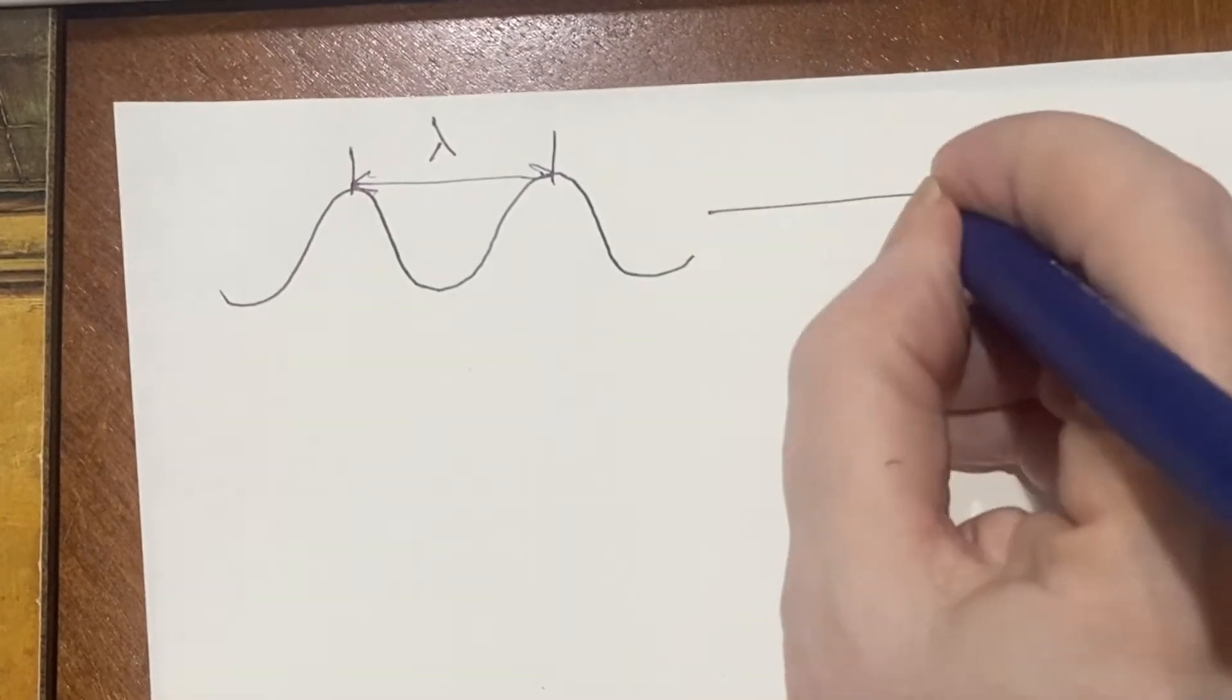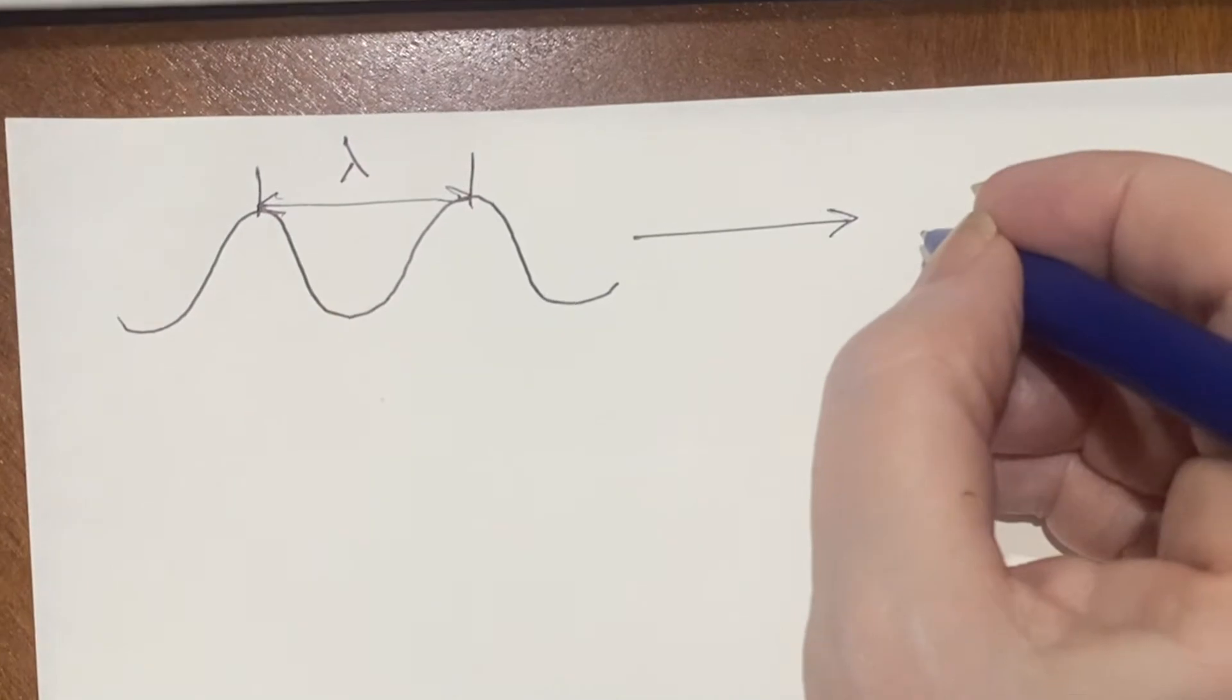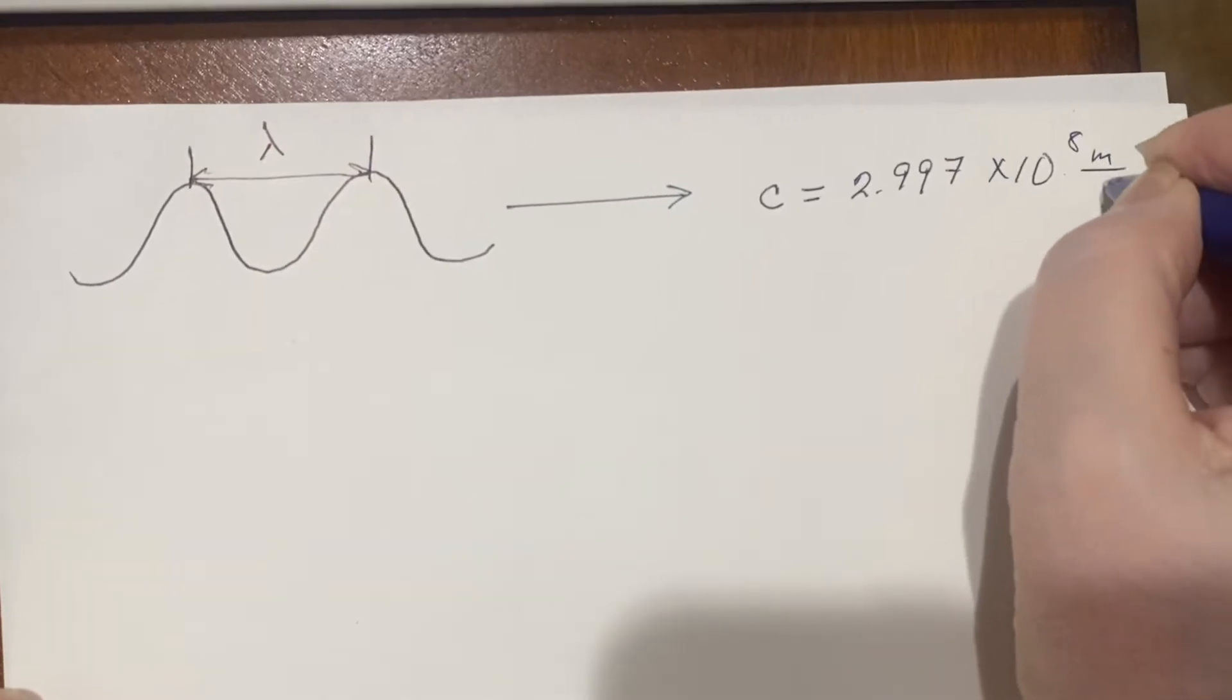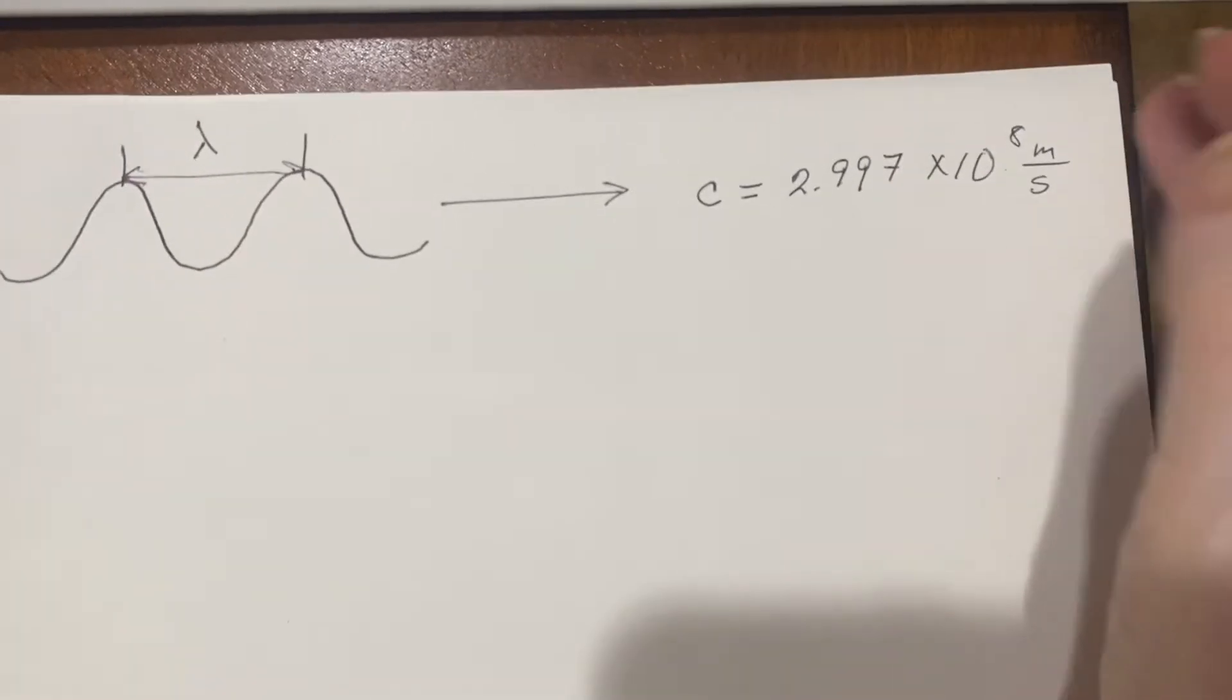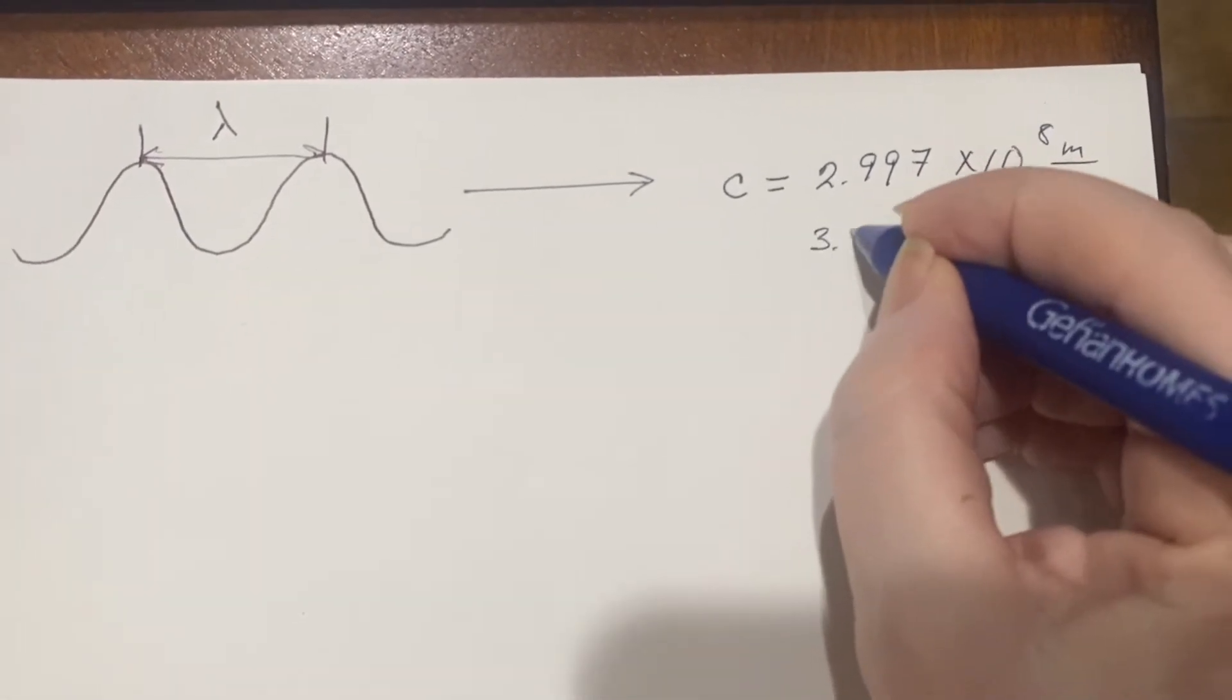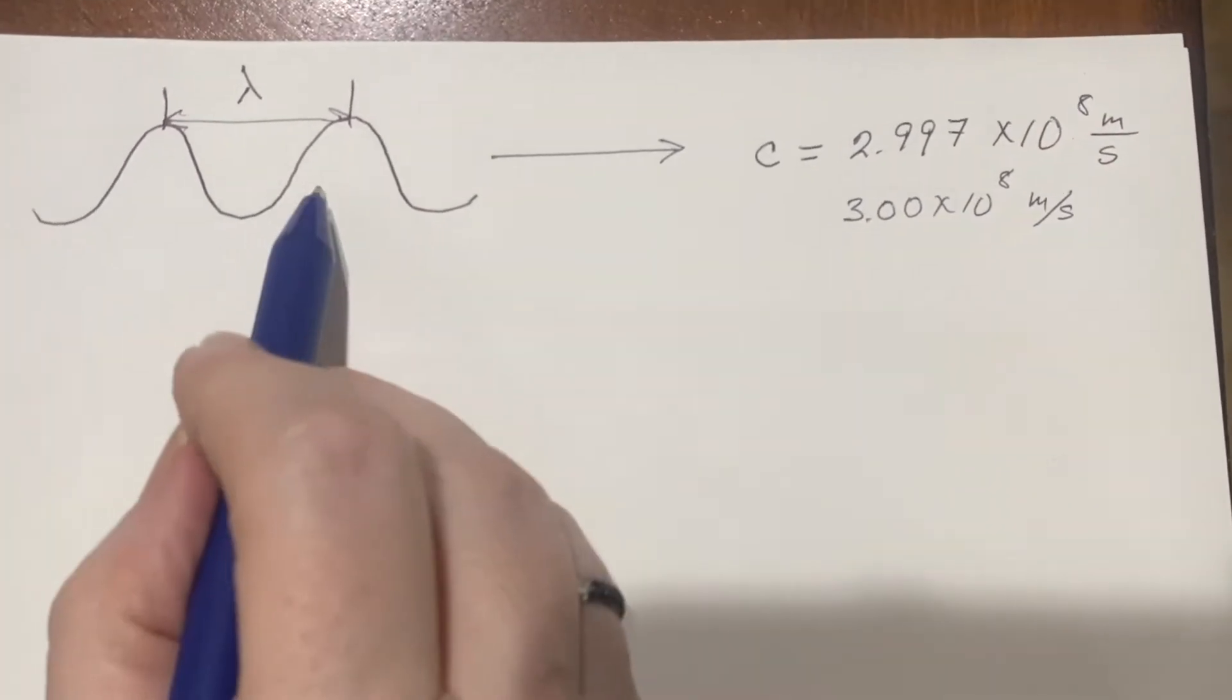Well, it's light, right? So it's moving at the speed of light, which is a set number, which we call C. It's moving very quickly. So many times you can just say 3.00 times 10 to the eighth meters per second. So it's moving that quickly.